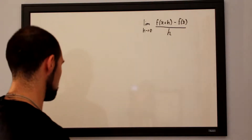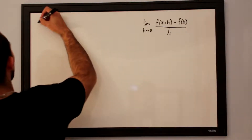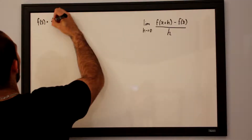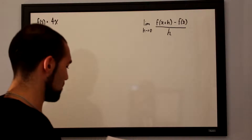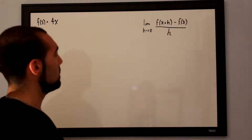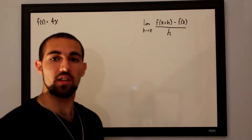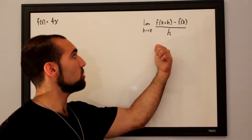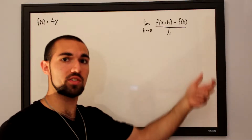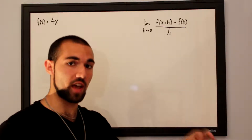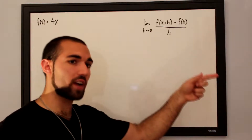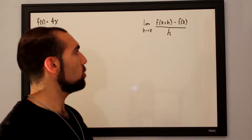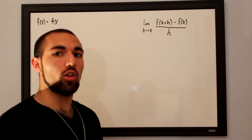Starting out, our first problem is going to be the function f of x equals 4x. This is going to be a pretty simple warm-up problem. What we want to do in order to take the derivative of this function is take the limit as h approaches 0 for f of x plus h — an infinitely small increase in x denoted as h — subtract off your initial function, all divided by h. So let's start by defining all of the terms that we have.